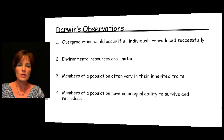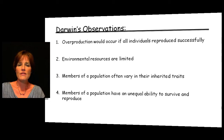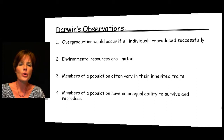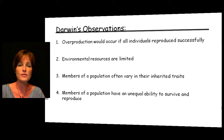The fourth point was that members of a population have an unequal ability to survive and ultimately to reproduce. If we have limited resources and variation among individuals, some individuals are just going to be better at surviving. If they survive, they are more likely to pass on traits to their offspring. For example, a really fast animal is more likely to escape predators than a very slow one. The fast ones are more likely to survive and produce offspring, while many slow ones will be eaten before they ever have the opportunity to reproduce.